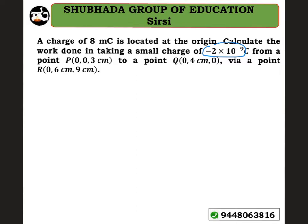First, let's draw a free body diagram. Here is the x-axis, the y-axis, and the z-axis. At the origin we have the charge of 8 millicoulomb.